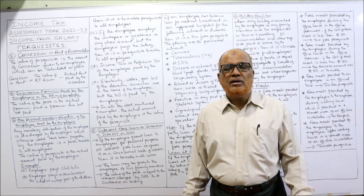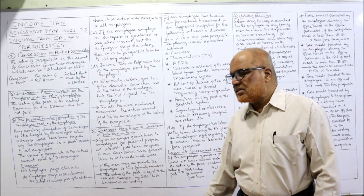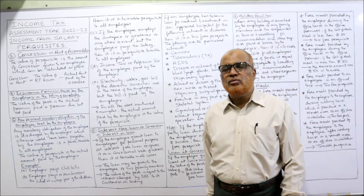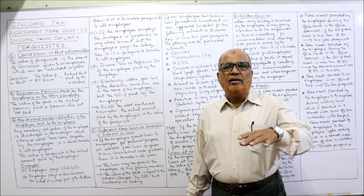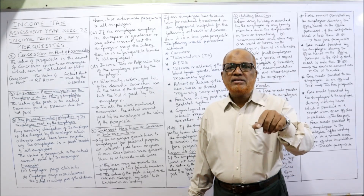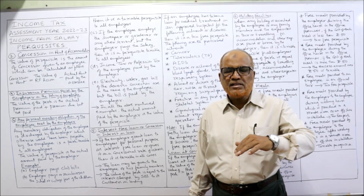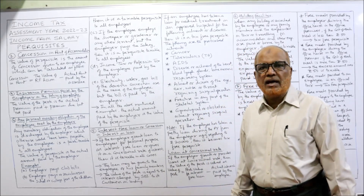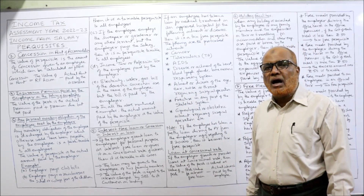Another example: the employer pays or reimburses school or college fees for the employee's children — that is a taxable perquisite in all cases. If the employee's children are studying in a school or college but the fees are paid or reimbursed by the employer, it is a taxable perquisite in the hands of all employees.